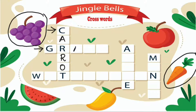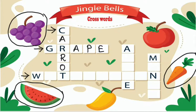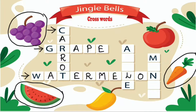The spelling of grape is G-R-A-P-E. Grape. The next word we are going to find will start with the letter W. It is a big fruit, green on the outside and red on the inside, with small tiny black seeds. What is the name of that fruit? It is watermelon. The spelling is W-A-T-E-R-M-E-L-O-N. Watermelon.